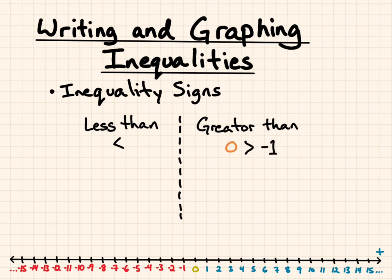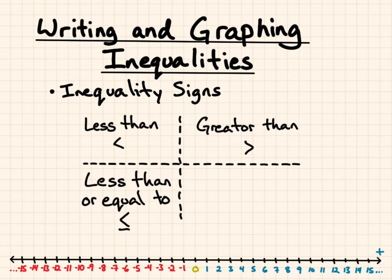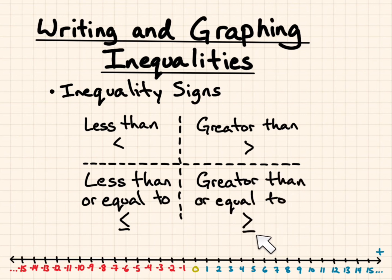0 is greater than negative 1. And if I had a value, say x is greater than positive 2, I can see that where positive 2 is on the number line, it doesn't include 2, because 2 is not greater than 2. But all the numbers to the right of 2 would be included. We'll also talk about less than or equal to, and greater than or equal to — for these signs, it can be equal to.